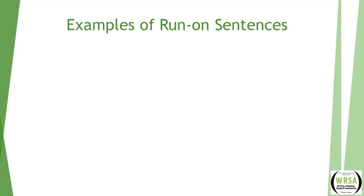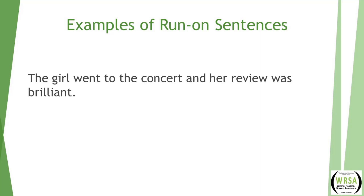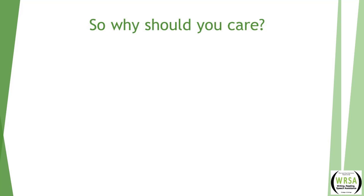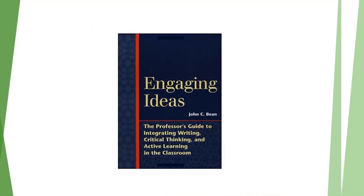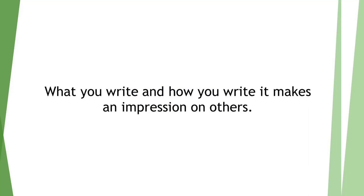Sometimes a run-on sentence does not compromise meaning. In this example, 'The girl went to the concert and her review was brilliant' is a clear sentence even though it is a run-on — it does not have a comma before the conjunction 'and.' So why does this matter if it doesn't interfere with meaning? Errors can lead to bad impressions. English teachers are not the only people who care about correctness in writing. In his book Engaging Ideas, John Bean discusses a study by composition researcher Maxine Hairston, who talked to business and professional people about errors that bothered them most. Run-on sentences were in the top category of very serious errors. What you write and how you write it matters — making mistakes might mean the difference between getting a job interview or not.